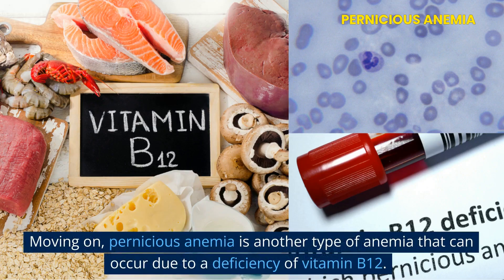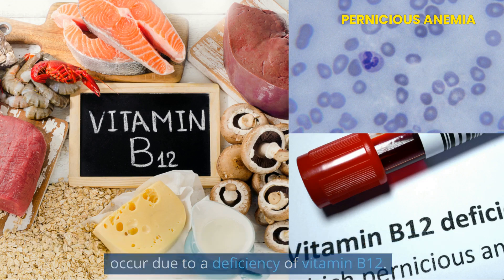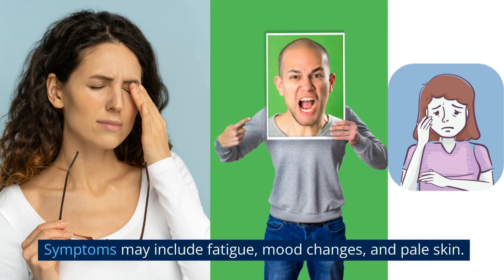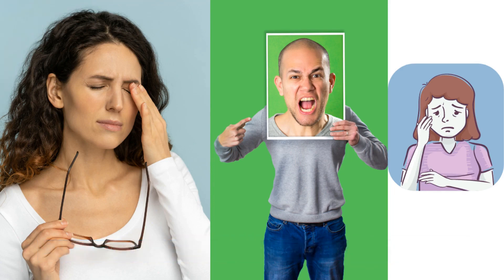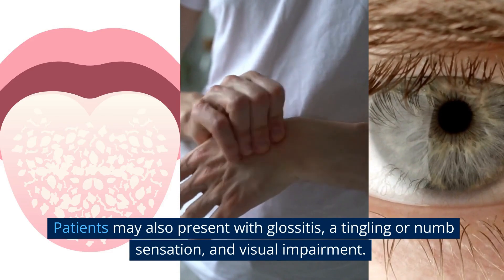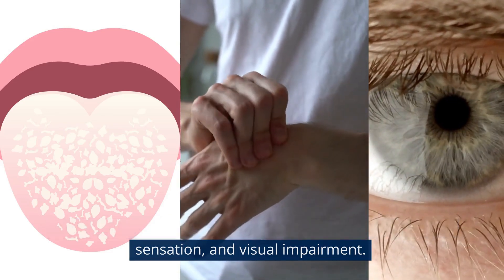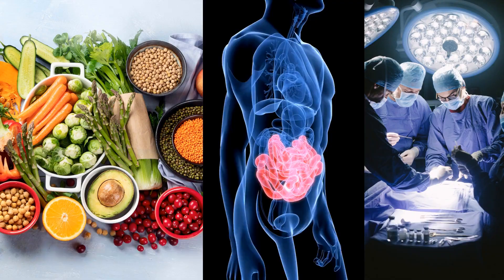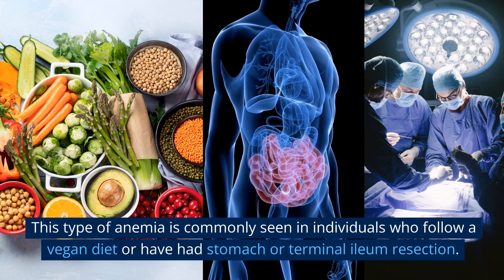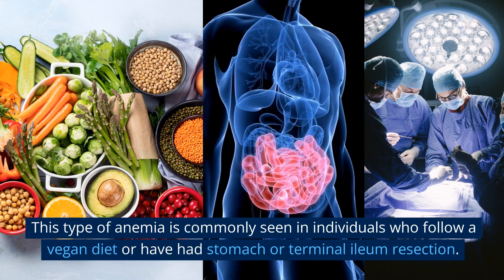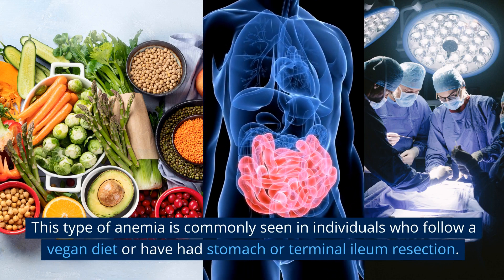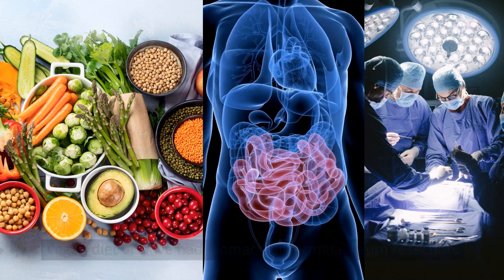Moving on, pernicious anemia is another type of anemia that can occur due to a deficiency of vitamin B12. Symptoms may include fatigue, mood changes, and pale skin. Patients may also present with glossitis, a tingling or numb sensation, and visual impairment. This type of anemia is commonly seen in individuals who follow a vegan diet or have had stomach or terminal ileum resection.